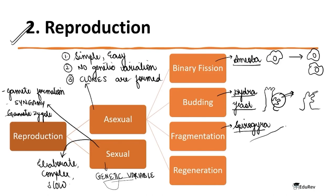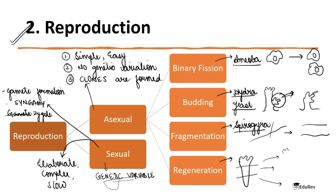The next type is fragmentation. For example, a spirogyra — a long individual will break down into two parts and both will individually live their life. The last one is regeneration. Many students confuse regeneration with fragmentation. In regeneration, the organism breaks into parts and each part develops into a new individual. In fragmentation, the new fragment lives as it is and does not form a whole body. Therefore regeneration is a more complex process than fragmentation.